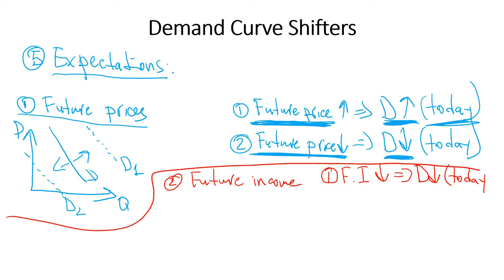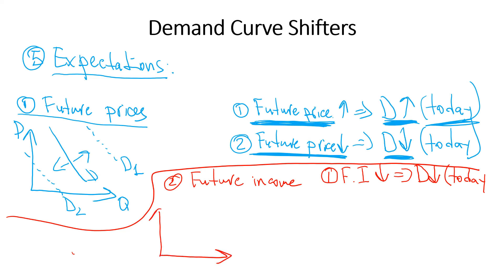Demand for goods and services is decreasing today, so on the graph the demand curve shifts down. This is our initial demand curve. My future income is decreasing — I haven't lost it yet, it's in the future — so demand decreases today. I'm going to be more thrifty and start saving because I'm uncertain about finding a new job right away.